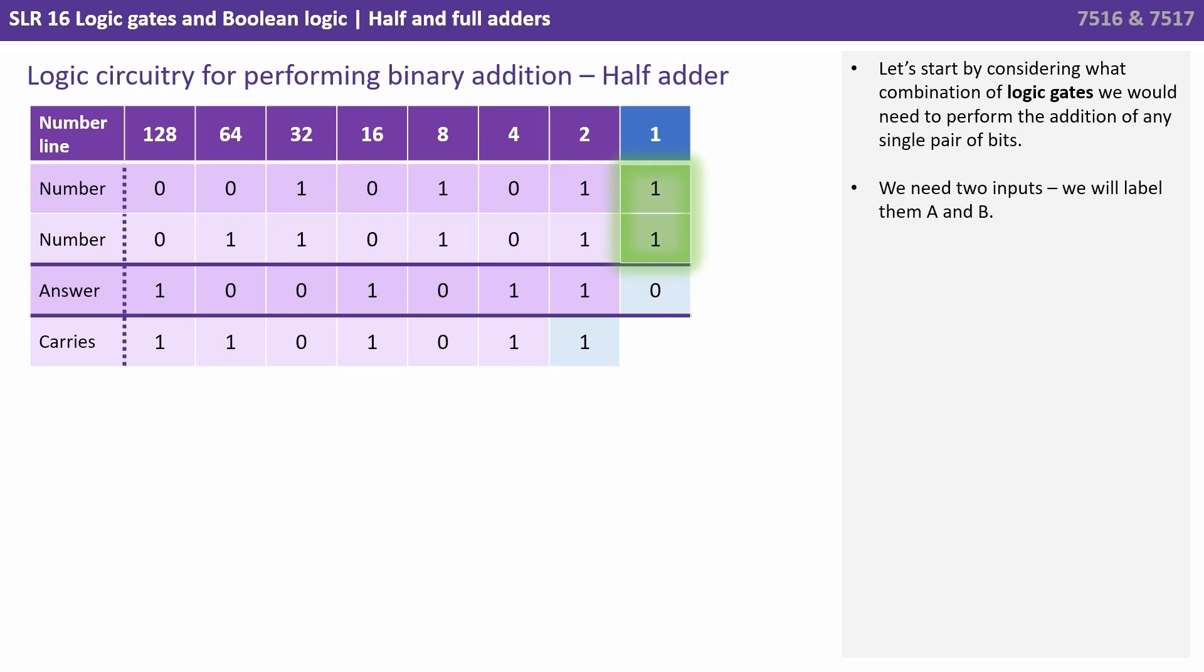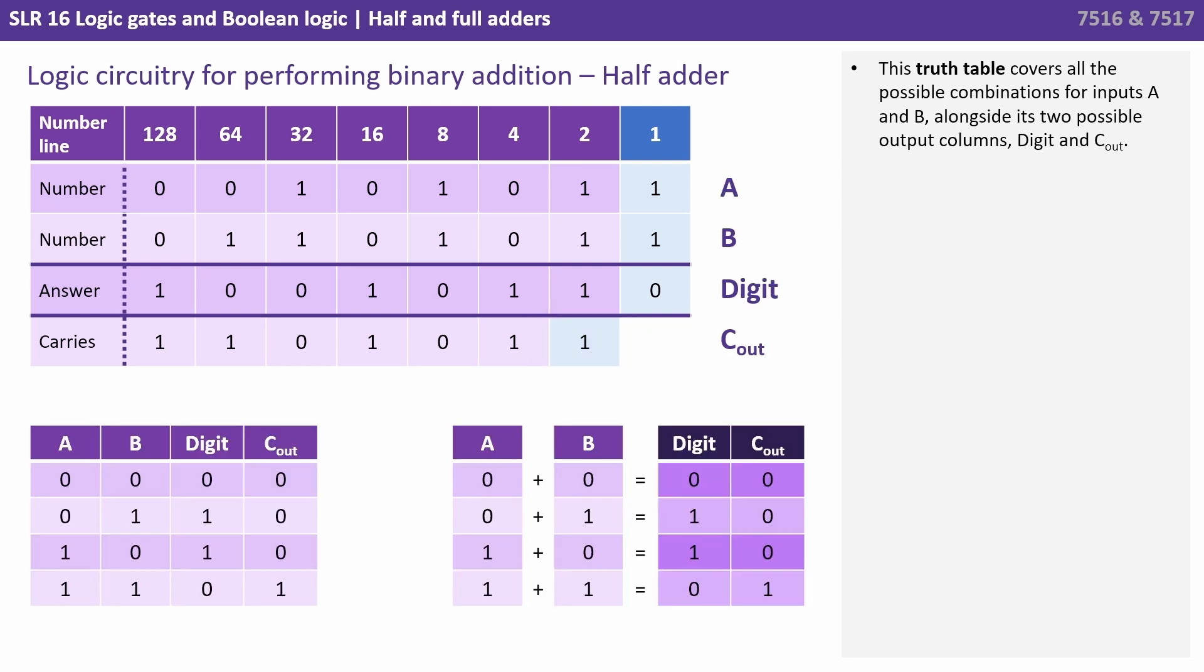So we need two inputs and we'll label those a and b. We have produced a sum as one of our outputs so we're going to label that digit. And we've also produced a carry bit which we'll then need to feed into the subsequent addition and we're going to label that c out carry out. So this truth table covers all the possible combinations for inputs a and b alongside its two possible output columns digit and c out.